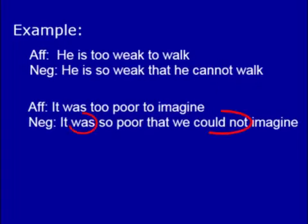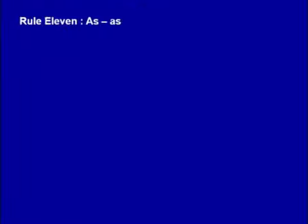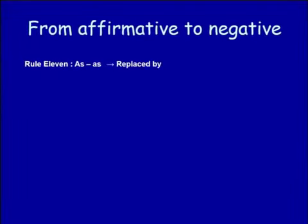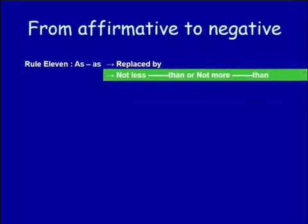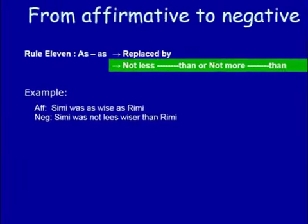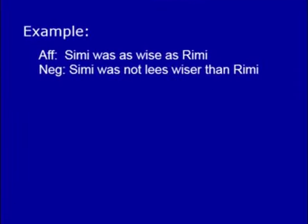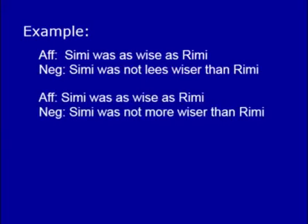Another example: 'It was too poor to imagine' becomes 'It was so poor that we could not imagine.' The principal clause verb is past tense, so we use 'could not.' Rule number eleven: 'as...as' is replaced by 'not less than' or 'not more than.' In the state of the first 'as,' use 'not less' or 'not more,' then the comparative form of the adjective. In the state of the second 'as,' use 'than.'